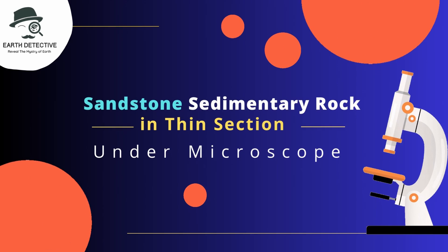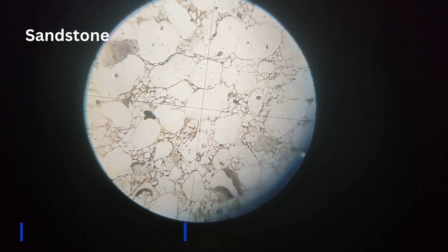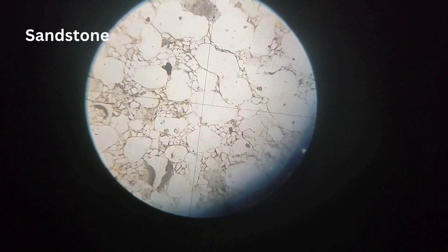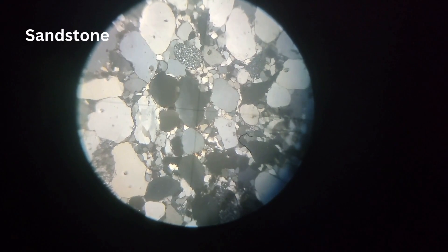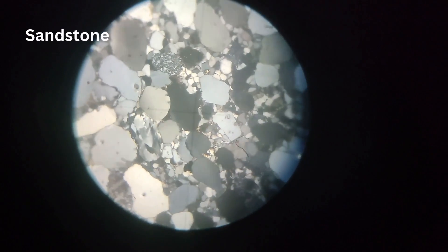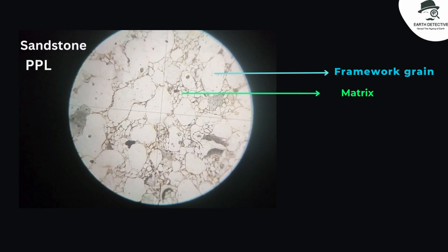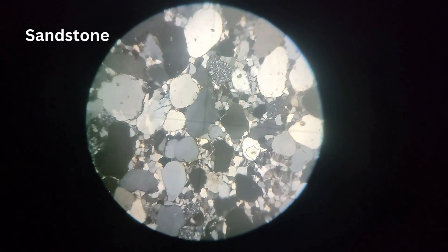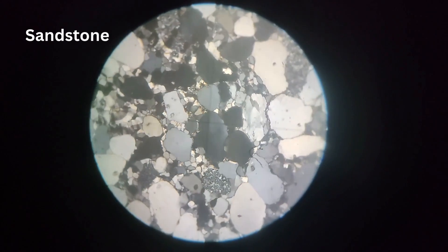In this video we are going to study sandstone under microscope. Here you can see framework grains and matrix. Framework grains are the larger solid particles or mineral fragments that make up the primary structural and textural element of a rock; they are typically the most abundant and prominent components. Matrix is the fine-grained mineral that fills the spaces between framework grains in a sedimentary rock, often composed of smaller mineral grains or other fine-grained materials.